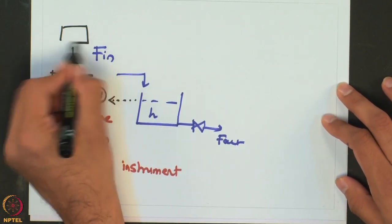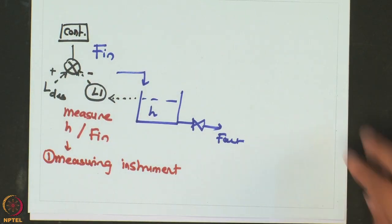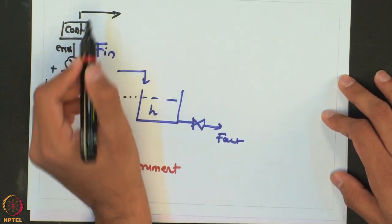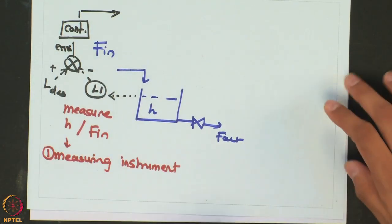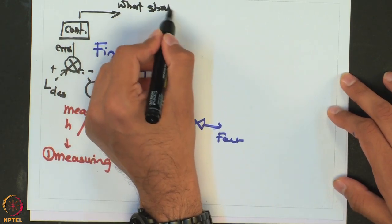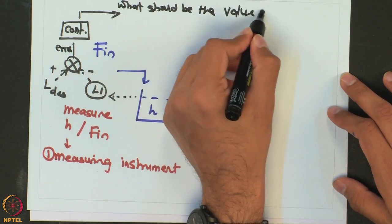Your control action or the controller would work on this error signal and it will give out a particular action on what should be the value of outlet flow rate.